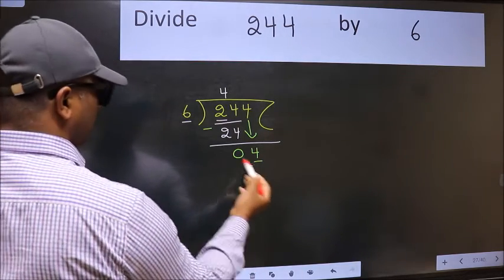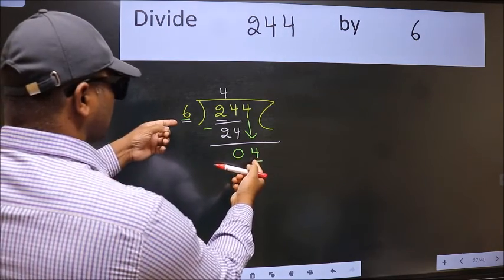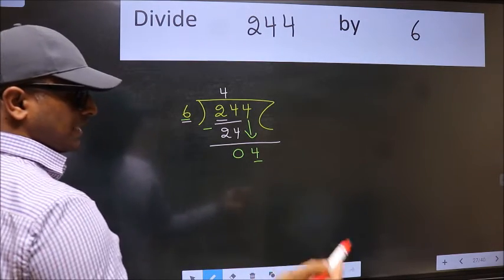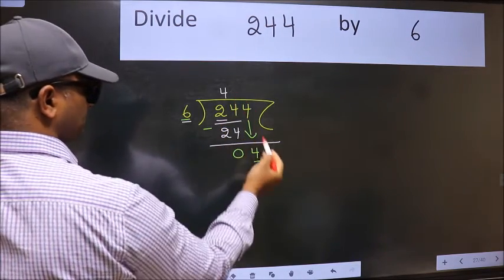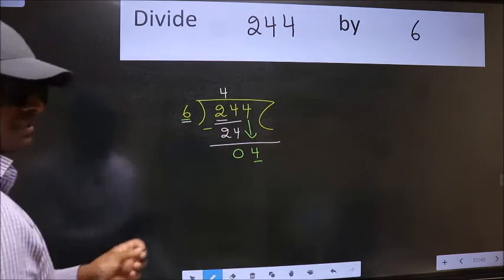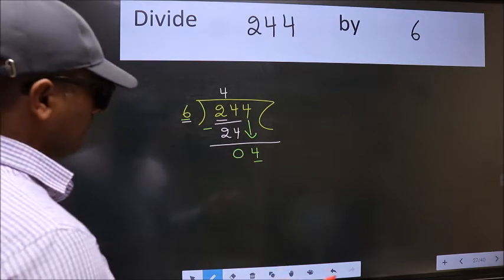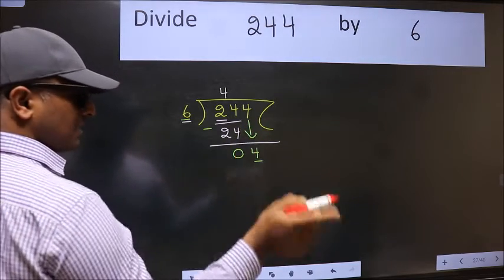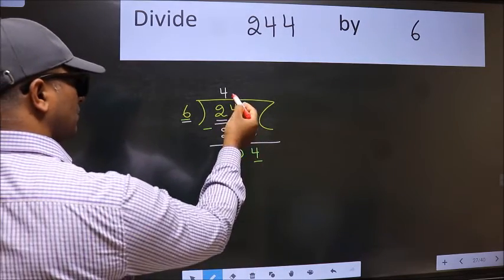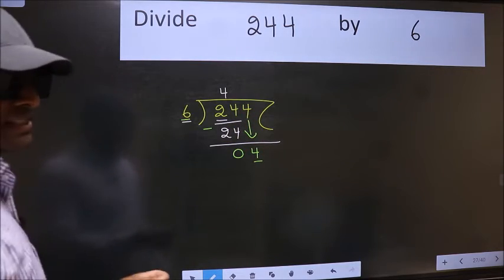Here we have 4 and here 6. 4 is smaller than 6. So what many do is, they directly put dot, take 0. Which is wrong. Why is it wrong? Because just now you brought this number down, and in the same step, you want to put dot, take 0. Which is wrong.